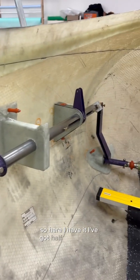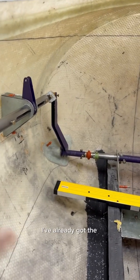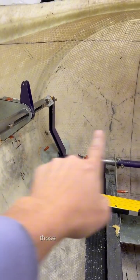So here I have it - I've got half of the upper controls test fitted in place. Everything lines up and looks good. I've already got the brake pedals and rudder pedals done. Those go across here, but I took them out in order to give myself a little bit of room to play with.